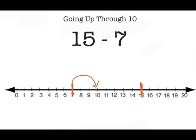Starting at 7, I'm going to jump up to the 10, my friendly number, because I know that 7 plus 3 equals 10. And I can very easily then jump from 10 all the way to 15. I know that 10 plus 5 equals 15.